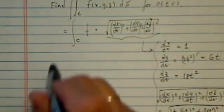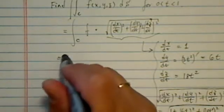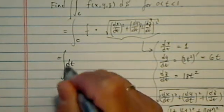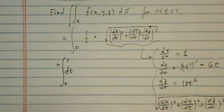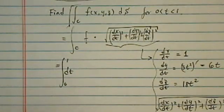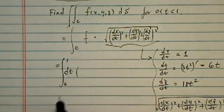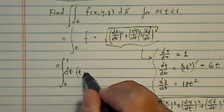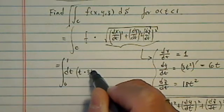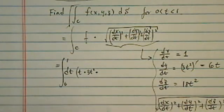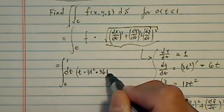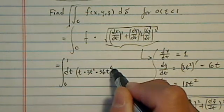Okay, so now let's do the easier part, and let's substitute it back in there. So we have dt from 0 to 1. Let's see what we have, f is equal to x times y times z squared, so x is t times y, which is 3t squared, times z squared, which is 36t to the 6th.